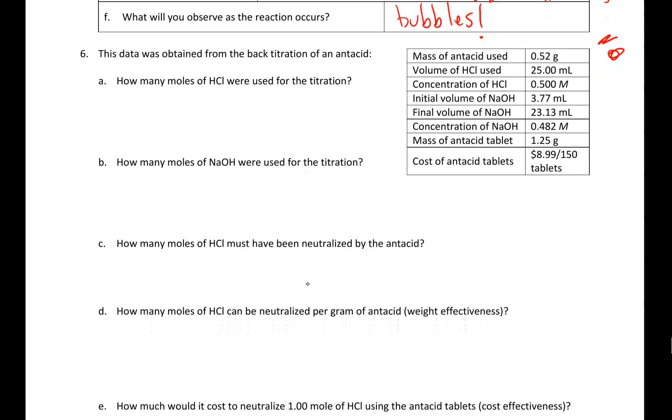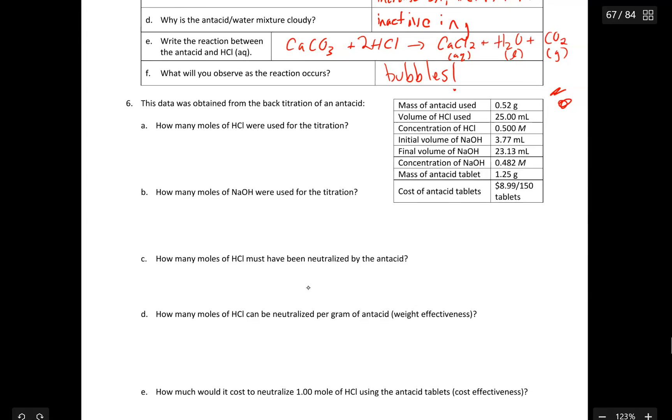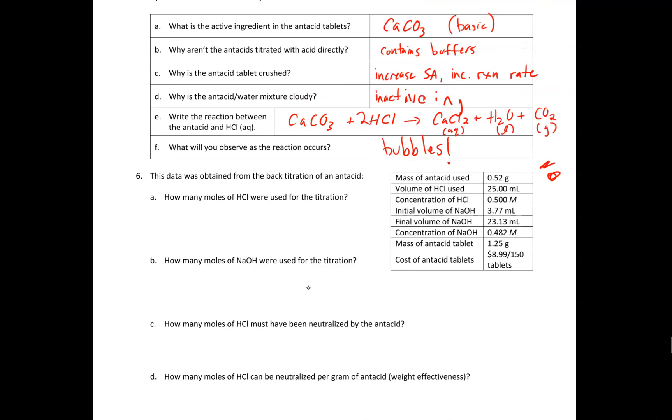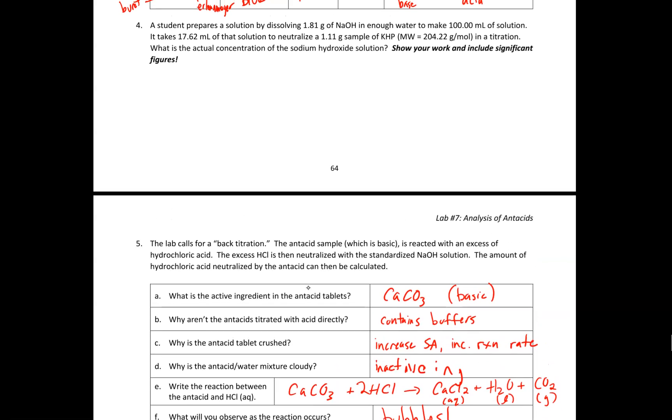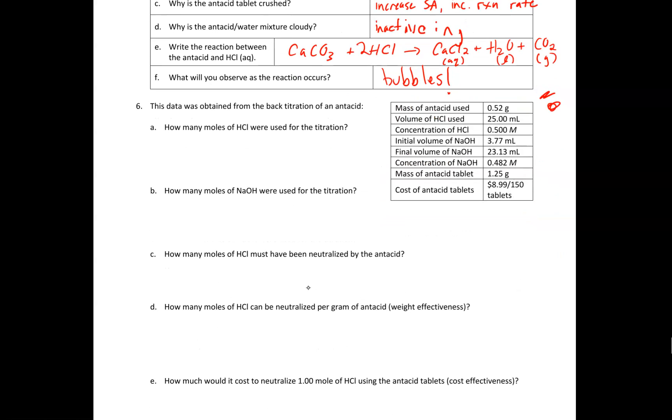A, B, and C kind of set you up for the effectiveness calculations. And then D and E are weight and cost effectiveness, respectively. I'm going to let you play around with those. So make sure for the pre-lab that you finish up question number four. Remember, there's a piece of numerical information in that problem that you do not and should not need to calculate. And try your best on question six.